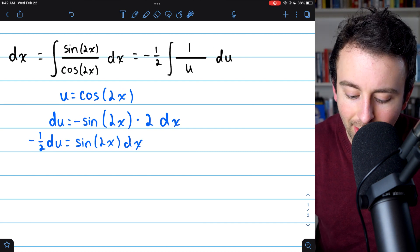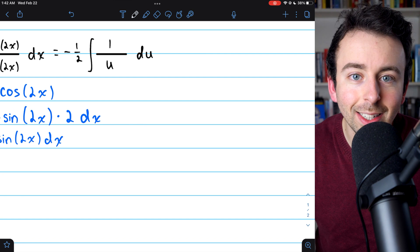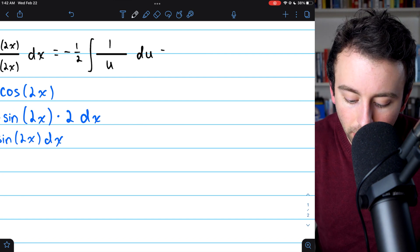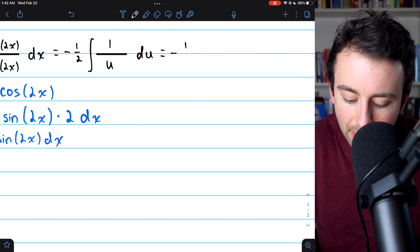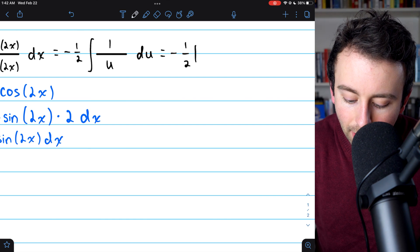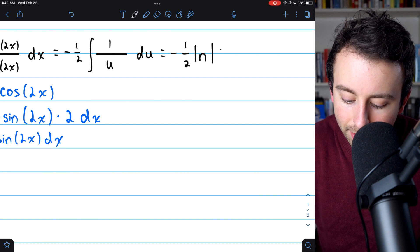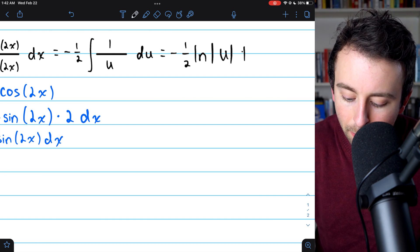You should recognize this. What's the integral of 1 over u with respect to u? That's just natural log. And so this integral becomes negative one-half times the natural log of the absolute value of u plus c.